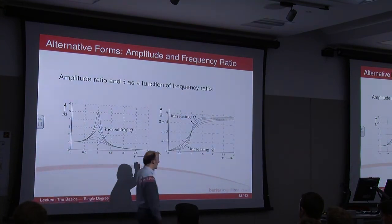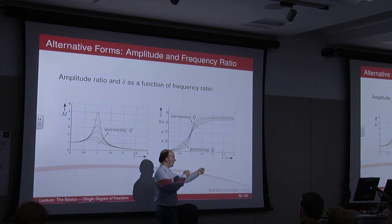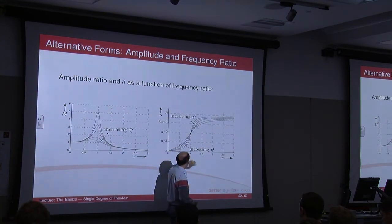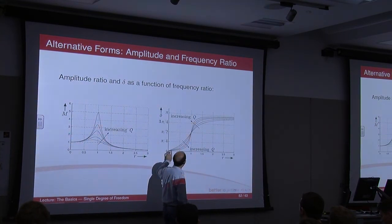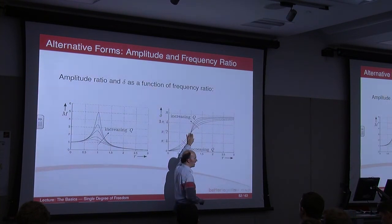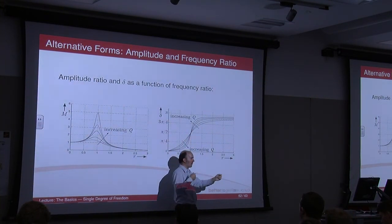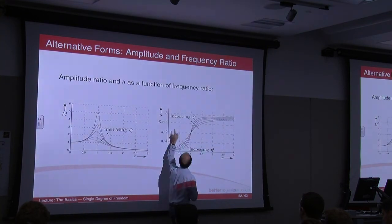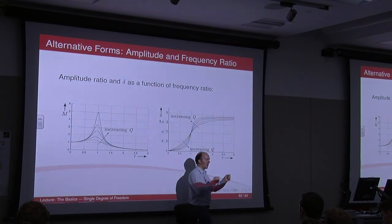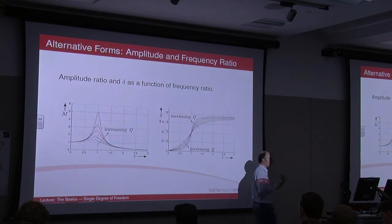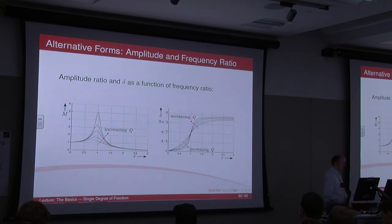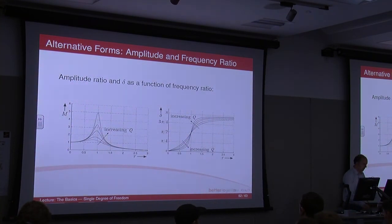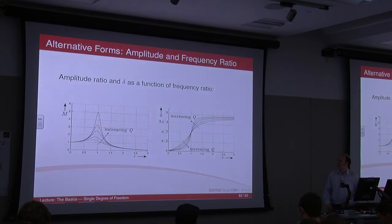And then with delta, which is the phase, you start off, things are moving in the same direction. And as you increase up to omega equaling omega naught, then you've got a 90-degree phase shift, so things are lagging behind by 90 degrees. And then as you go beyond that point, you end up approaching pi in terms of phase shift, so things are actually moving in the opposite direction there, 180 degrees out of phase with the input. So that's giving you detail of M and r.